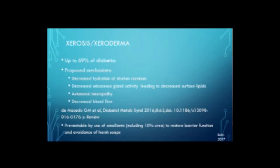Diabetics also get xerosis or xeroderma — dry skin. Up to 69% of diabetics get dry skin. The proposed mechanism includes decreased hydration of the stratum corneum, decreased sebaceous gland activity leading to decreased surface lipids, autonomic neuropathies affecting the secretion of sweat and sebum, and decreased blood flow. Studies have shown these are actually easily preventable by just using emollients, including 10% urea, to restore the barrier function of the skin, and also by avoiding harsh soaps.